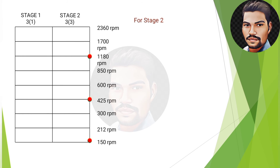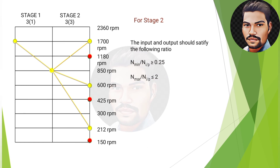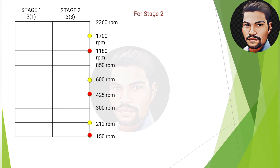For the second input, we move three intervals further and assume 850 rpm as the input speed for the next set of three output speeds. Checking: the minimum speed divided by 850 gives approximately 0.2495 ≈ 0.25, which satisfies ≥ 0.25; and the maximum speed divided by 850 equals 2, satisfying ≤ 2. So the second input of 850 rpm also fulfills the criteria.